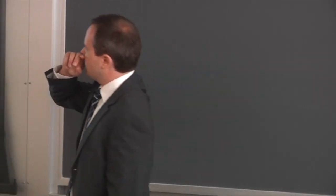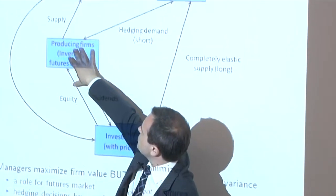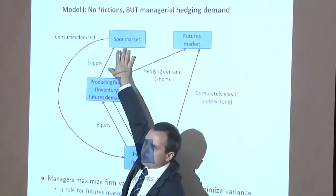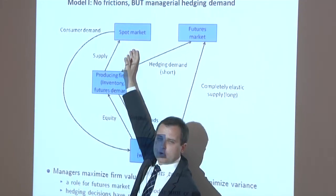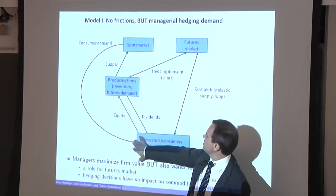Let me just show you a very simple model. There's some plots here. There's investors at the end. These are guys that invest in equities and everything. There's a producing firm, and there's a spot market. They produce, for instance, crude oil. They put it to the spot market, and the investors, consumers, we use gas, we use this.